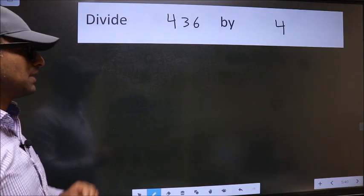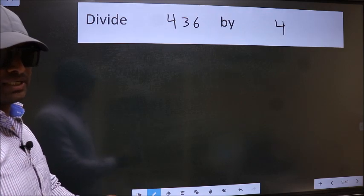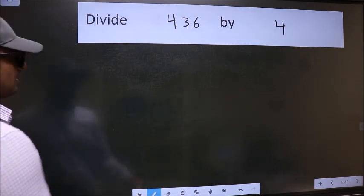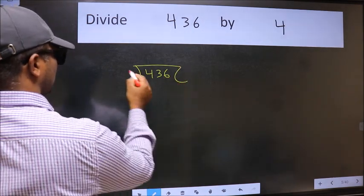Divide 436 by 4. To do this division, we should frame it in this way. 436 and 4 here.